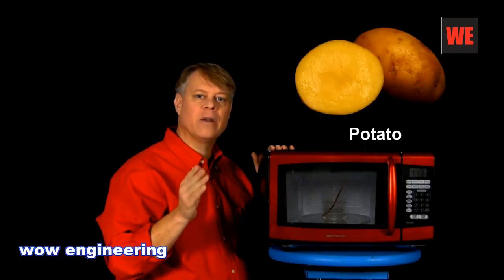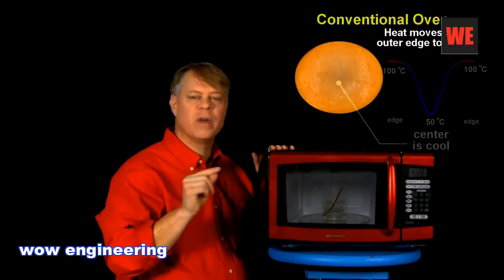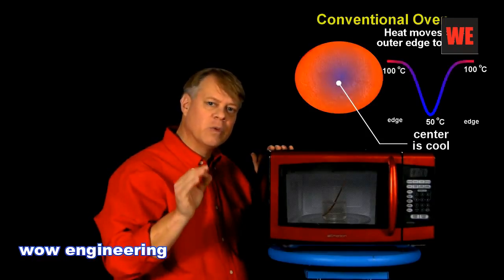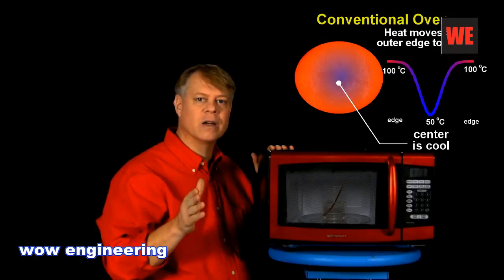In a traditional oven or stove, we heat food by placing a pan on a burner, or in the oven where the walls radiate heat, which cooks the outside of the food. The insides cook when heat transfers from the surface of the food to its interior.